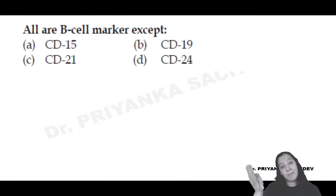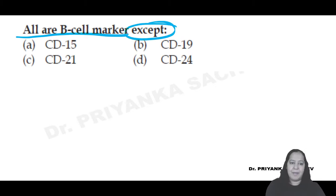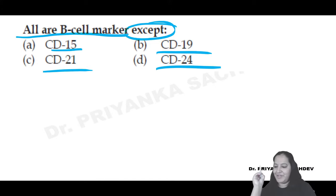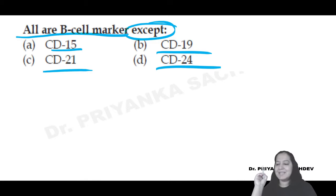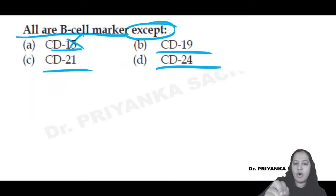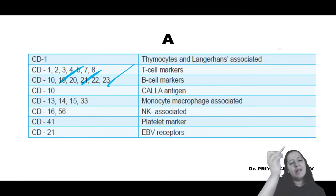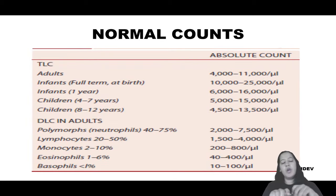Third poll: All of the following are B cell markers except - CD15, CD21, CD19, or CD24? The correct answer is A - CD15. CD15 is not in the B cell marker list. The rest (CD21, CD19, CD24) are all present in the B cell marker list. So learn these B and T cell markers - you cannot afford to miss them.